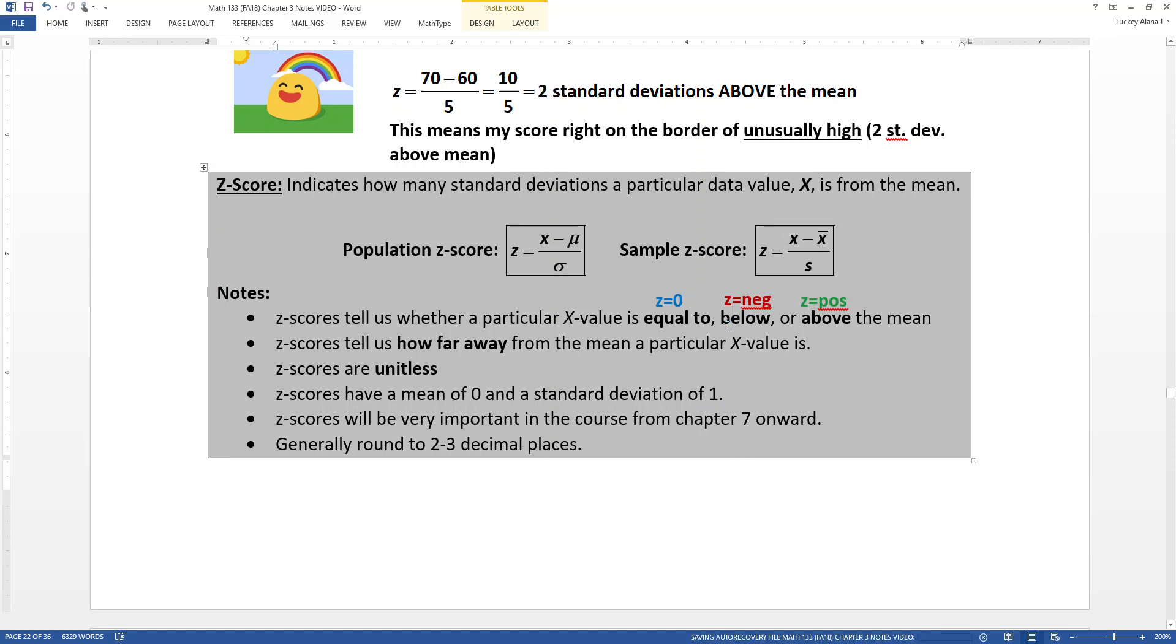The Z score tells you how far away from the mean your particular X value is. So are you 1 standard deviation away, 2 standard deviations away, 2.3, 2.6 standard deviations away, etc. Z scores have no units. There's no feet, no inches, none of that stuff. The Z score, of course, is going to have a mean of 0, because if you score the mean value, whatever mu or X bar is, then your Z score would be 0. So scoring the mean means you have a Z score of 0, and a standard deviation of 1, because if you score one standard deviation above, then your Z score would be 1. So it seems weird, but it's as obvious as you think it is. And again, just to reiterate, Z scores are very important from Chapter 7 onward. Generally, we round Z scores to about two or three decimal places, depending on the situation.